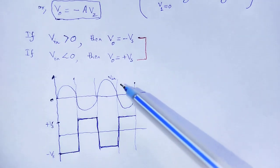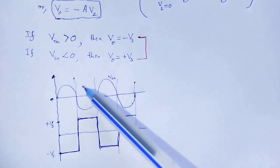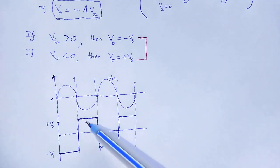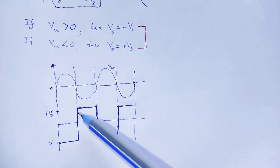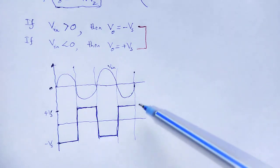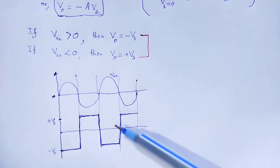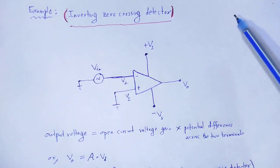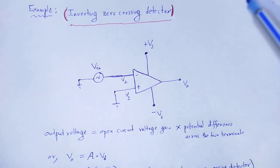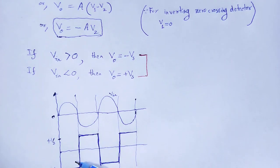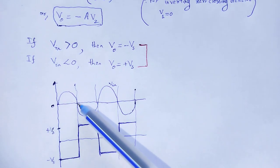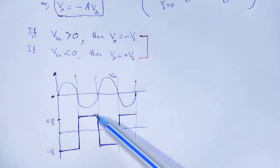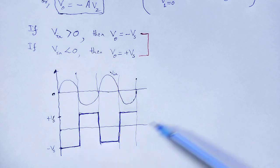This is the graph. This is the input signal, and at the output we obtain that type of signal. If it is a non-inverting zero crossing detector, then what happens? That graph totally changes — for the positive half cycle it will be +Vs, and for the negative half cycle it will be -Vs.